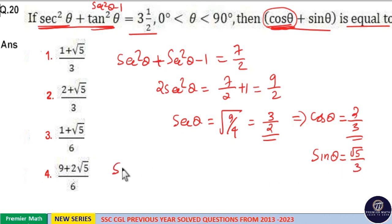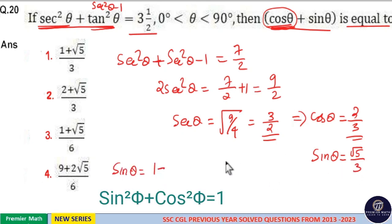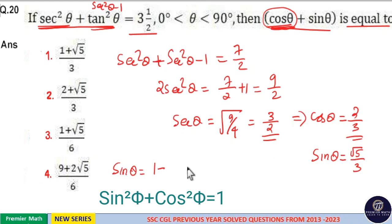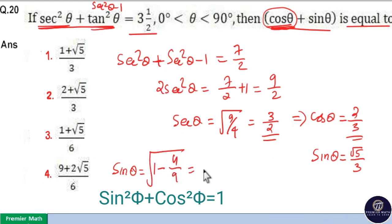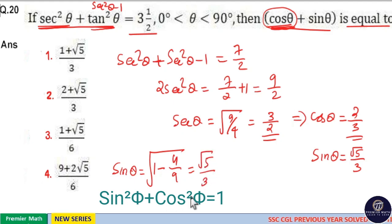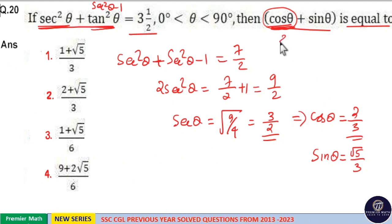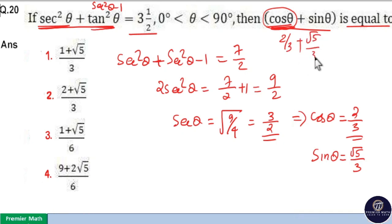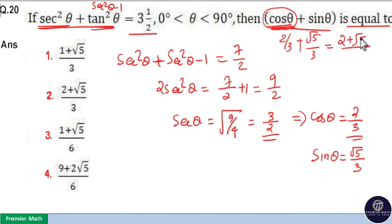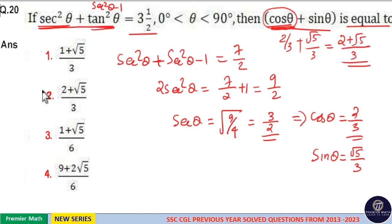Or you can find sinθ using sin²θ + cos²θ = 1. So sinθ = √(1 minus 4/9) = √(5/9) = √5/3. Now cosθ = 2/3 and sinθ = √5/3, which gives cosθ + sinθ = (2 + √5)/3. So option 2 is your answer.